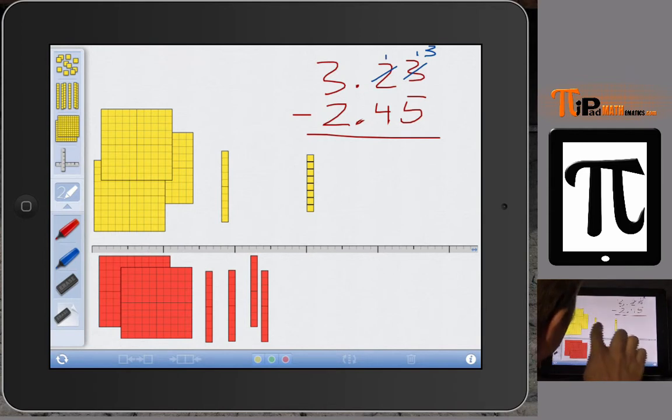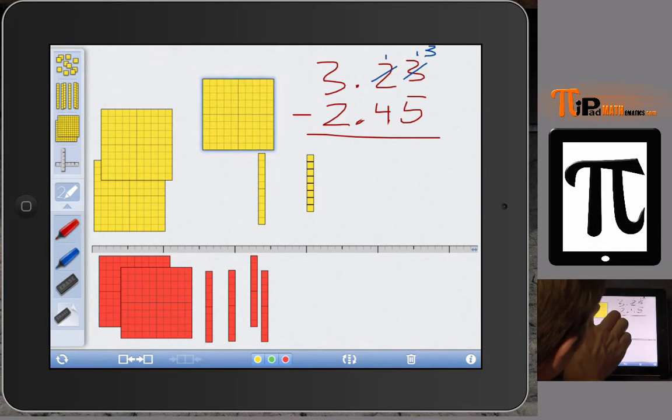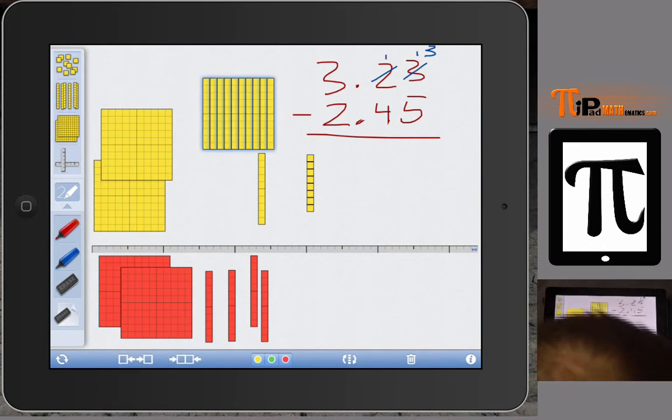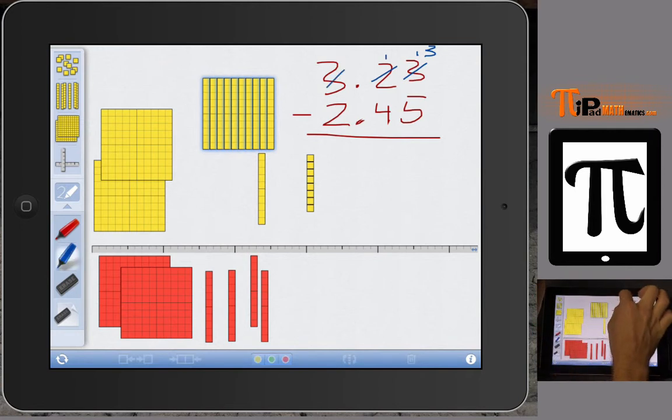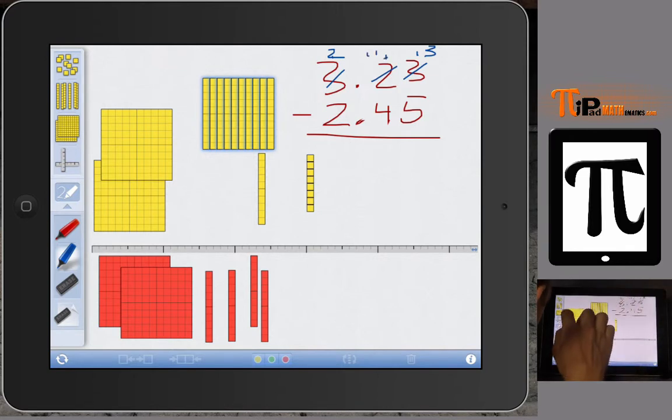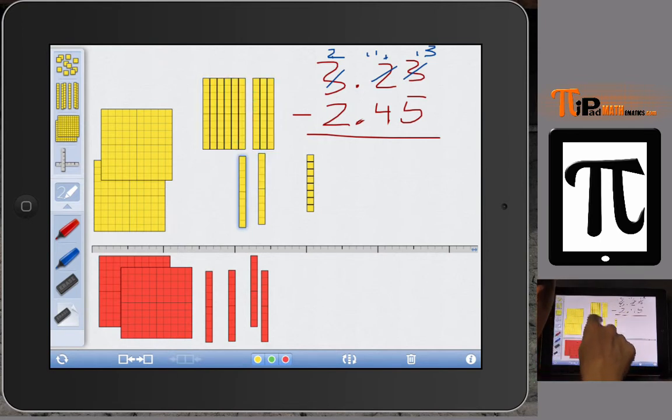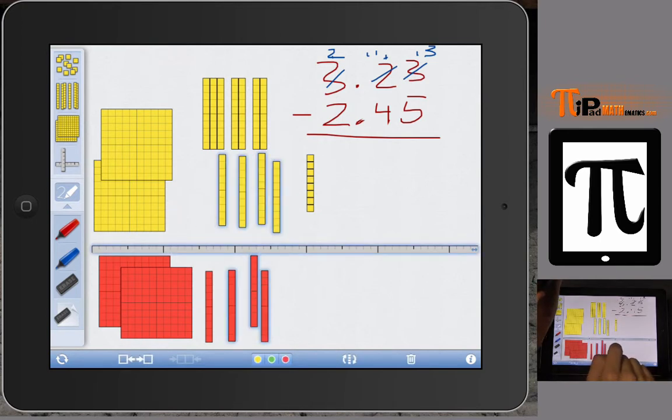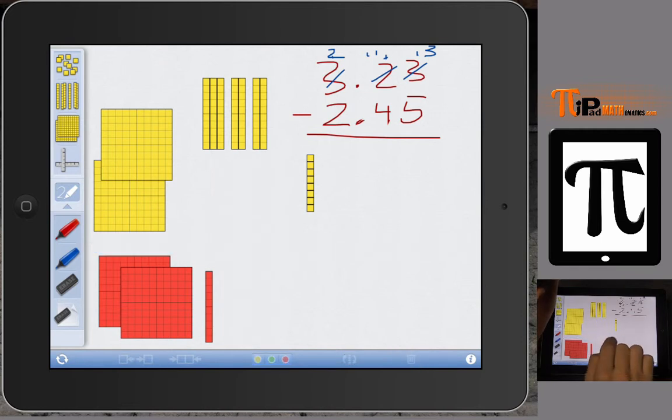And now we do the same thing with our tenths place. We don't have enough, so we have to go next door and we need to regroup. We need to regroup the 3 and leave 2 over there. And when we regroup, we're going to have 11 tenths. The 11 tenths are 10 right here, plus that one makes 11 tenths. And then we're going to pair them up with 4 of these red ones.